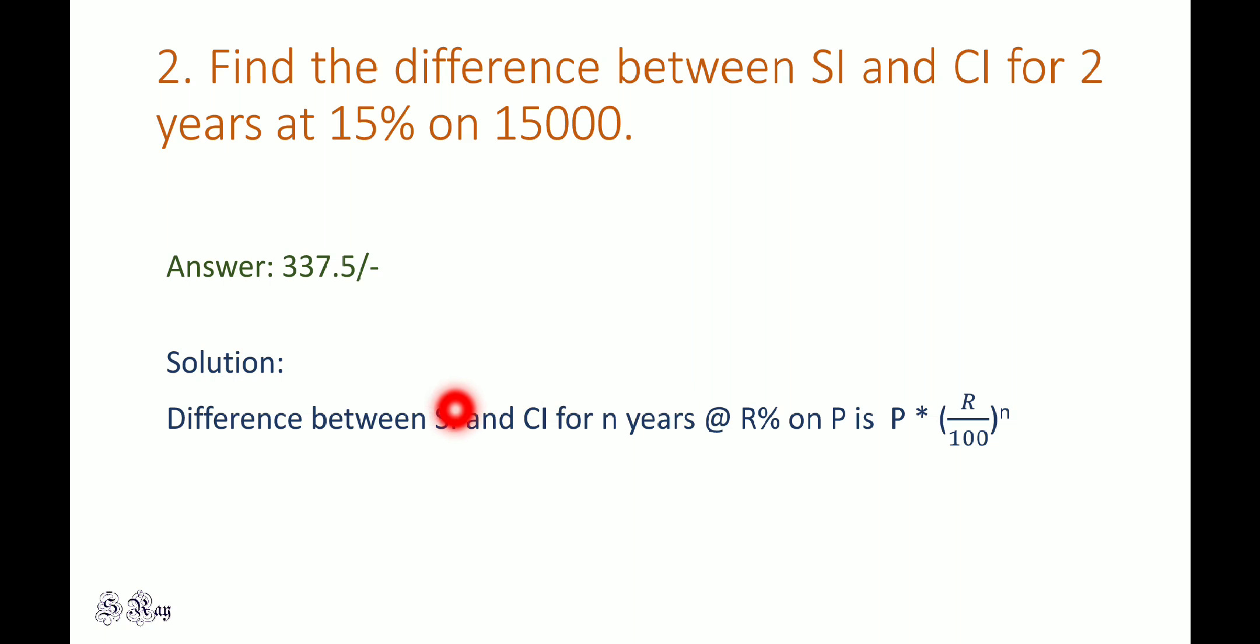The simple formula is: the difference between simple interest and compound interest for n years at R percent on principal P is P times (R/100) to the power n. Here P is 15,000 and R is 15 percent. When you solve this, you get 337.5.